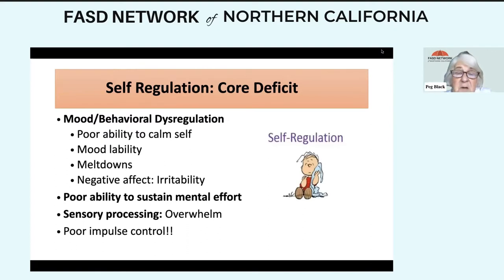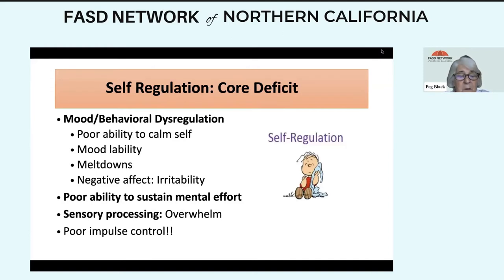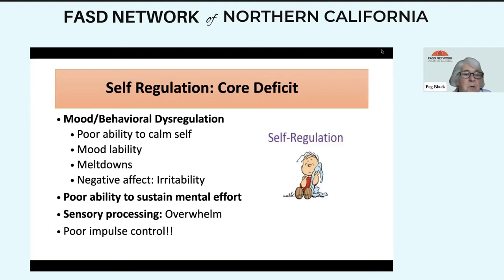Self-regulation is a core deficit. What you see: mood and behavioral dysregulation, poor ability to calm self, mood lability, meltdowns, and negative affect — a general layer of irritability. Poor ability to sustain mental effort: a student not completing work is not being volitional and is not refusing to work — it is poor ability to sustain mental effort. Poor impulse control is a core deficit area.